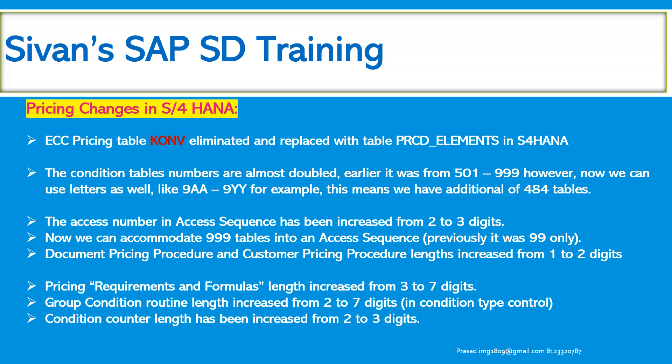These are the major changes between ECC and S4 HANA. That is why S4 HANA is chosen by the majority of clients — there are no more ECC implementations; only S4 HANA implementations are happening. Whenever we are migrating to S4 HANA from ECC, we have to keep all these points in mind and proceed accordingly.